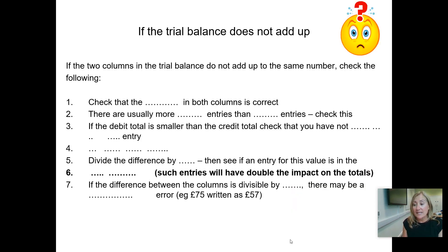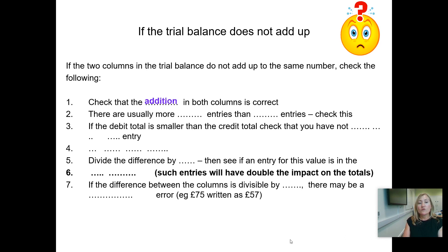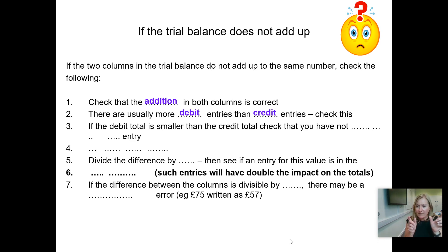Don't panic if your trial balance doesn't add up — one of the big skills in accounting is a little bit of resilience. Things don't always go to plan, so if your two columns do not add up, just check through the following. First, check that the addition in both columns of the trial balance is correct — add up your debits and your credits and make sure that's right. Generally, you'll find there are more debit entries than credit entries because of the number of expenses most businesses have, so check that you've got more things on the debit side.